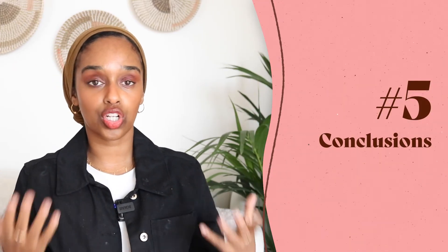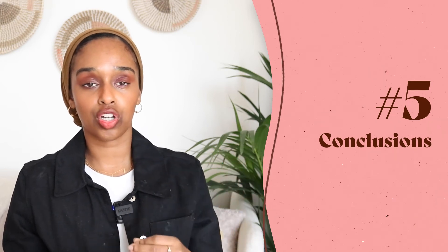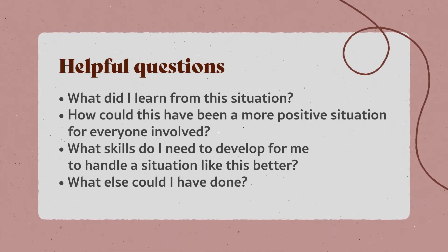Step five, the penultimate one, is the conclusion. You've understood what happened and now you want to wrap up everything you've learned from your reflection, thinking about what could be done better next time and giving yourself an action plan. Ultimately you want to improve the outcome in the future. Questions to ask: What did I learn? How could this have been more positive for everyone involved? What skills do I need to develop to handle this better in the future? Remember to use first person — 'I will do X, Y, and Z' — to give yourself accountability.